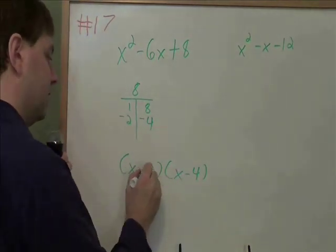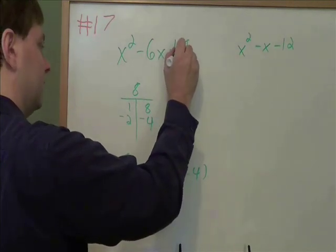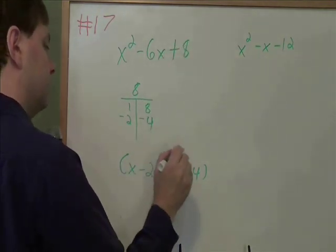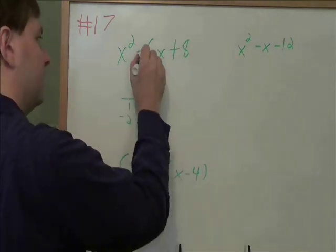We know that's right because negative 2 times negative 4 gives us the plus 8 at the end. And negative 2 plus negative 4 gives us that minus 6 in the middle.